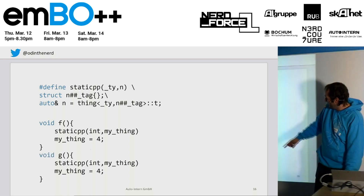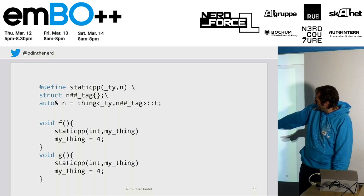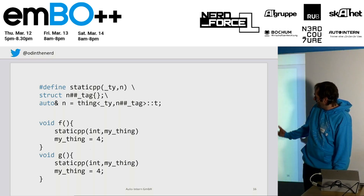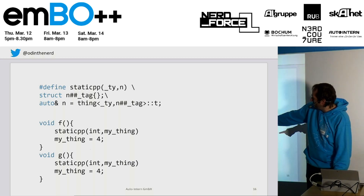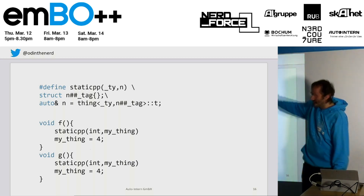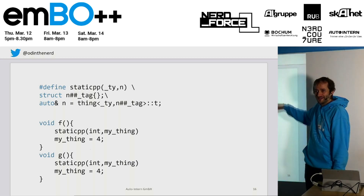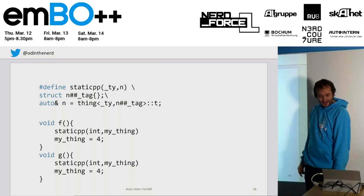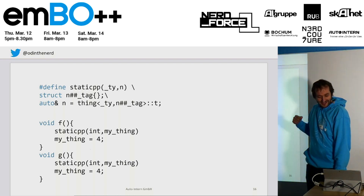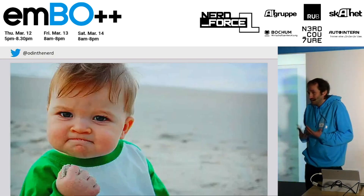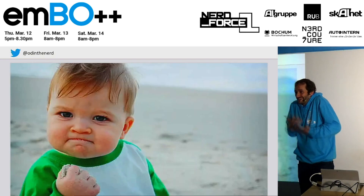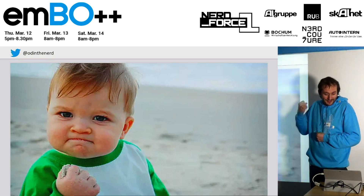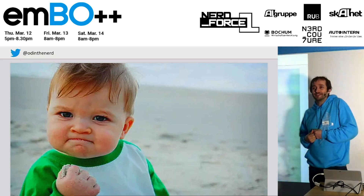If you have another one in a different function g, it still works — because that's a different my_thing; in its mangled name there's also the function it's in. This is a way to get around the problem and reach the success baby rather than the bomb. That was my lightning talk about how templates solve everything.